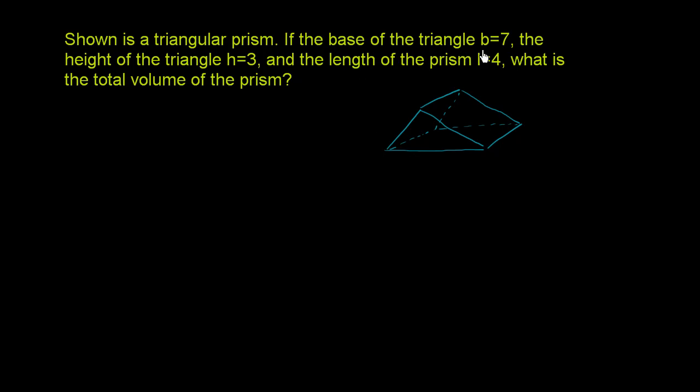If the base of the triangle B is equal to 7, the height of the triangle H is equal to 3, and the length of the prism L is equal to 4, what is the total volume of the prism?